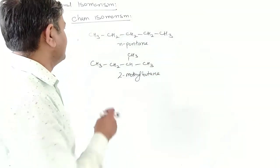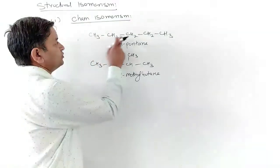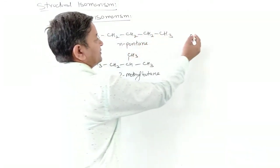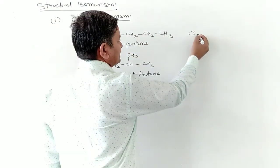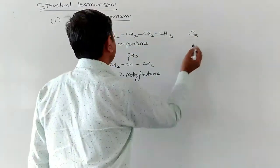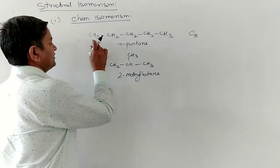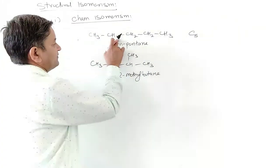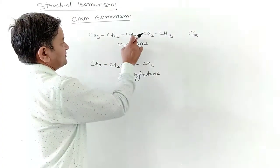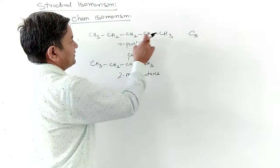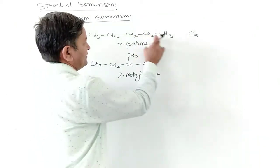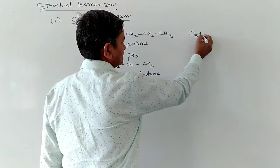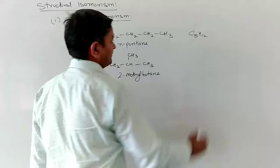Now let's look at another structure. Counting the main chain: 1-2-3-4-5. Looking at the branching, this is 3-methylbutane — also an isomer of pentane with the same molecular formula.